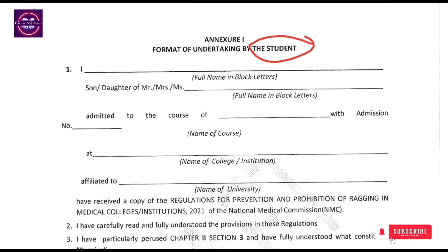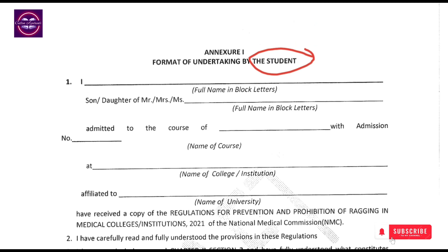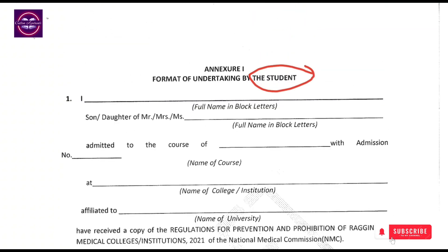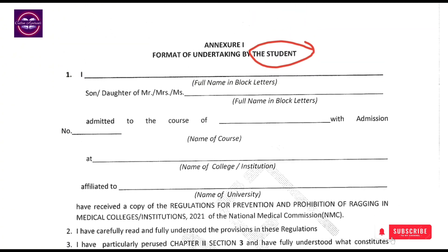Let's look at the first item: you submit the anti-ragging declaration. Where is it? You can find it on the respective medical college's website. This form is related to that medical college website. Otherwise, you can join the Telegram channel and download the printout.